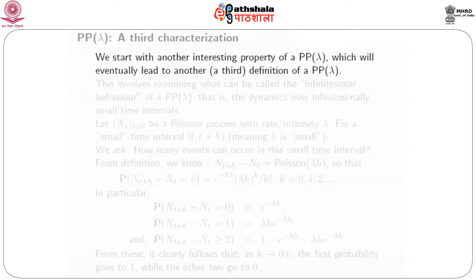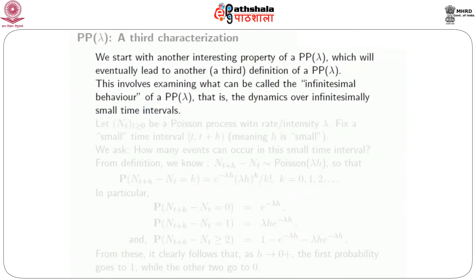What we are going to do in this module is, for the Poisson process with rate lambda, get a third characterization. We start with another interesting property of Poisson process with rate lambda which will eventually lead to a third definition of PP(lambda).